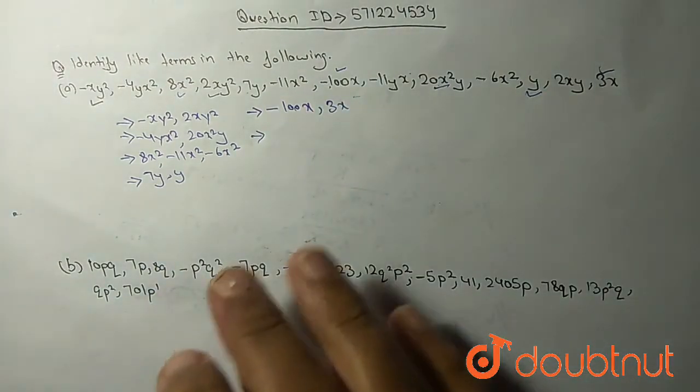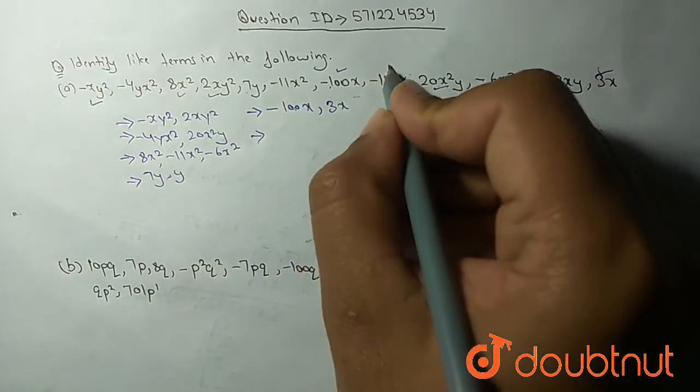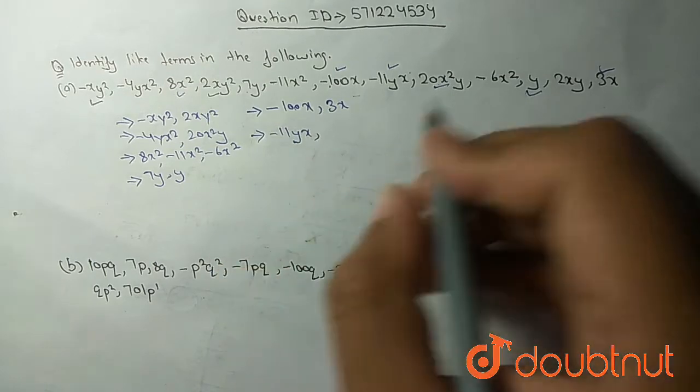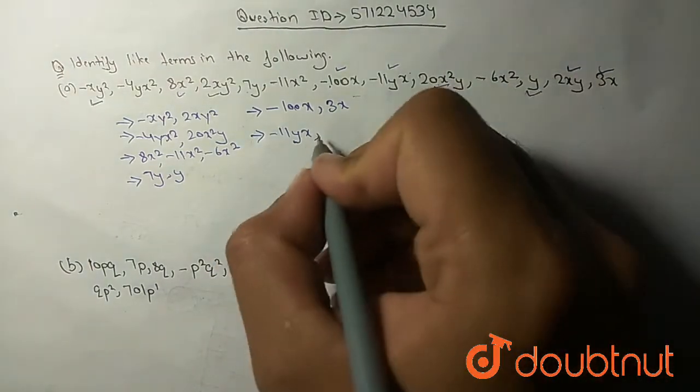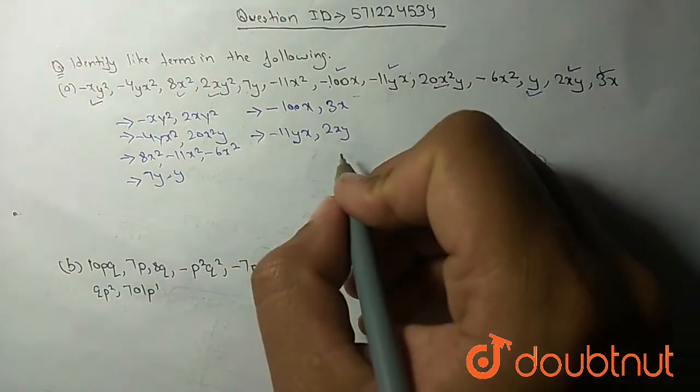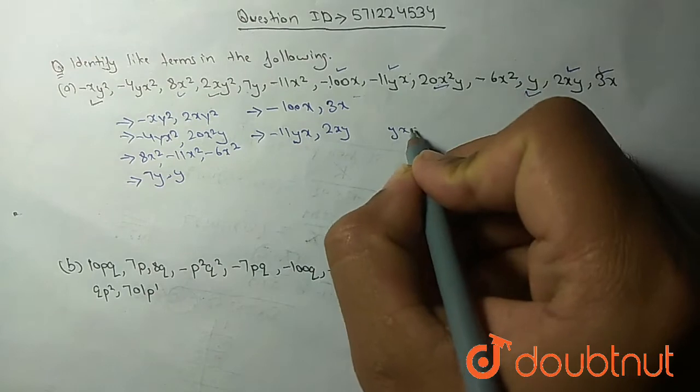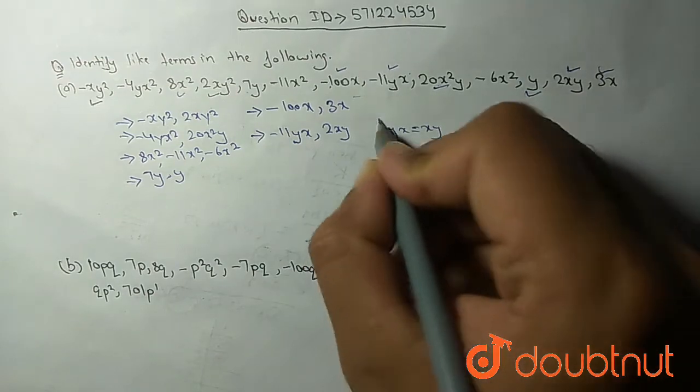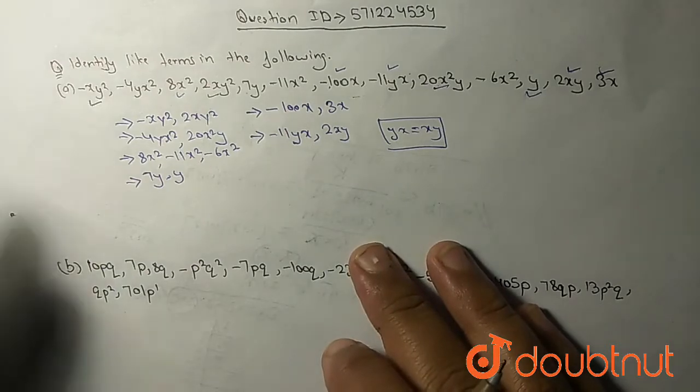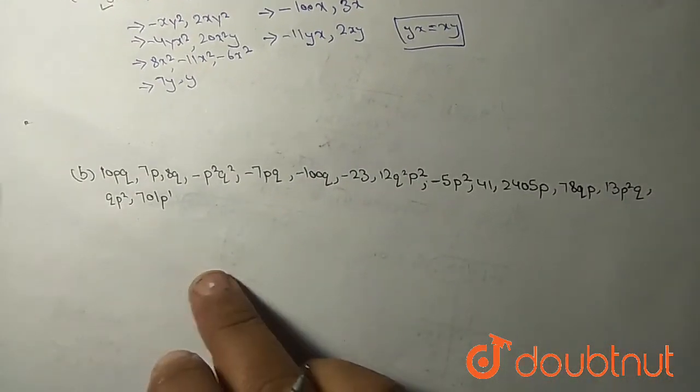Moving forward, minus 11yx. 2yx like terms are 2xy, because yx is equal to xy, it is same, nothing different. Now I'm going to the second equation.